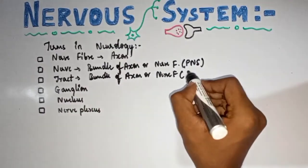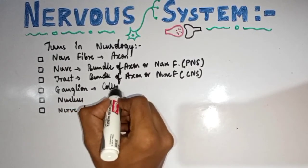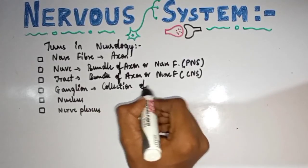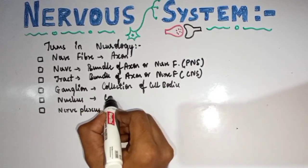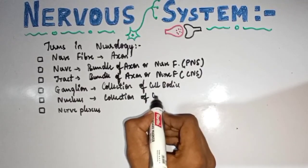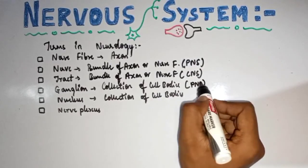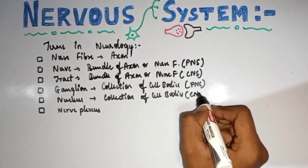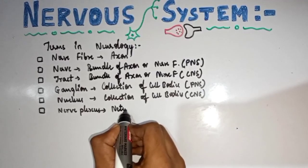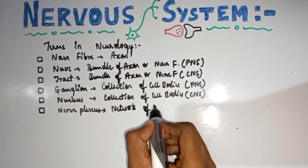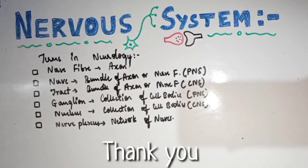A ganglion is a collection of cell bodies present in the PNS. A nucleus is also a collection of cell bodies, but present in the CNS. A nerve plexus is a network of nerves — groups of nerves forming a network among each other.